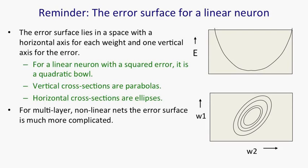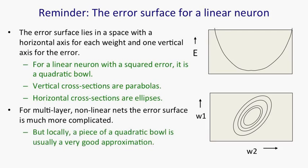But as long as the weights aren't too big, it's a smooth error surface, and locally, it's well approximated by a fraction of a quadratic bowl. It might not be the bottom of the bowl, but there's a piece of quadratic bowl that will fit the local error surface very well.